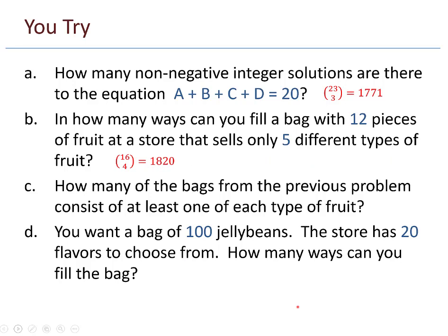Problem C. How many of the bags from the previous problem consist of at least one of each type of fruit? So I'll be subtracting five right from the beginning, right? I throw the five pieces of fruit into the bag to begin, and then instead of needing 12 altogether, I need seven. So seven plus the four dividers gives me 11. So 11 choose four, 330.